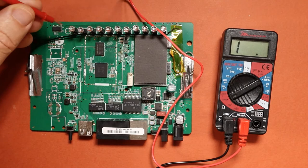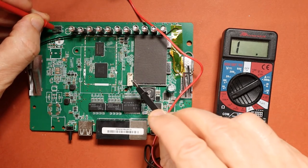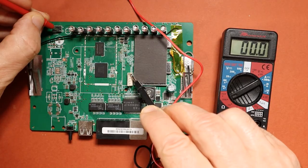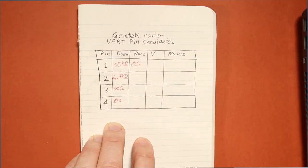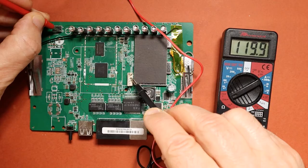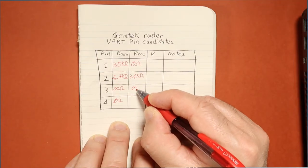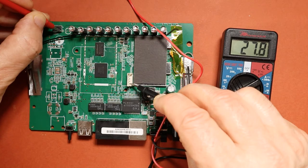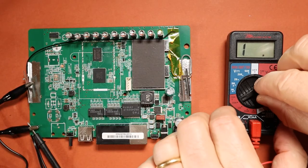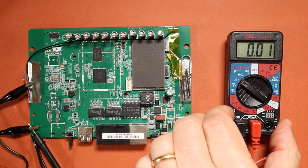We can repeat the same measurements but this time against VCC. We take pin 14 of the 74HC164 as the VCC reference. We can see that pin 1 has 0 ohm resistance against VCC, so probably pin 1 on this connector is VCC. Pin 2 has about 30 kilohms against VCC, pin 3 has a very high out-of-scale resistance against VCC, and pin 4 has about 30 kilohms against VCC.